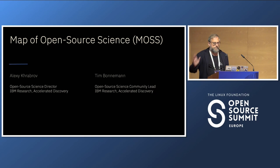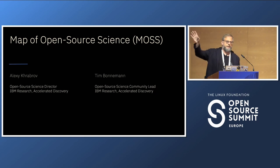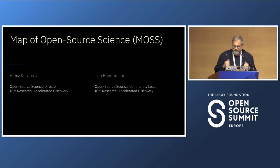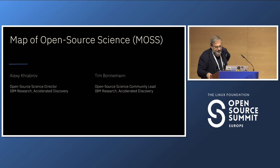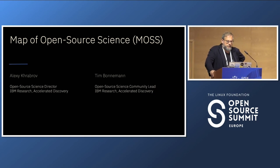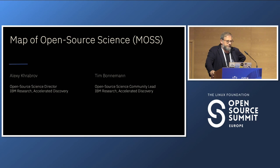Maybe some of you have seen us at the Open Source Science booth. I will explain what Open Source Science is and what the relationship to IBM is and the focus it has. Map of Science is a project of Open Source Science — it's a working group initiative. I'm going to talk about the ideas, the data, and the goals of this project, and hopefully some of you can join us in it or send folks who can benefit.